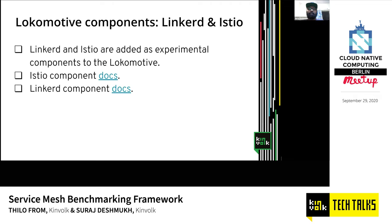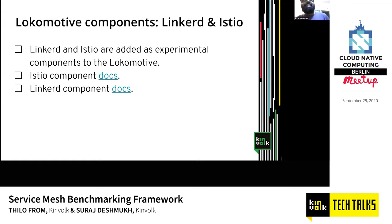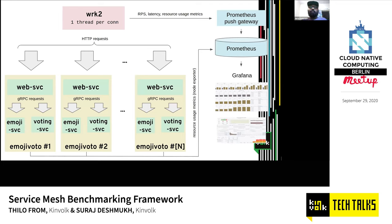WRK2 is used to generate load and measure latency, and emojivoto is the demo app. It is deployed multiple times across multiple namespaces — you can always tweak how many application instances you want, depending on how much you want to stress the whole thing. Lokomotive has a notion of components — all Helm charts are baked in and the configurations these components provide are supported by Kinvolk as part of Lokomotive. Linkerd and Istio have been added as experimental components right now. At the pod level, WRK2 sends HTTP requests to various applications, and once metrics are collected by WRK2 they're pushed to the Prometheus push gateway.